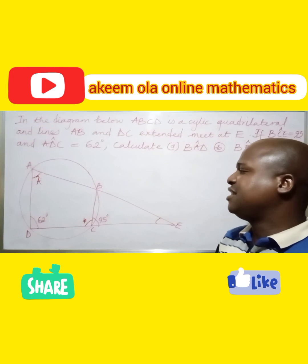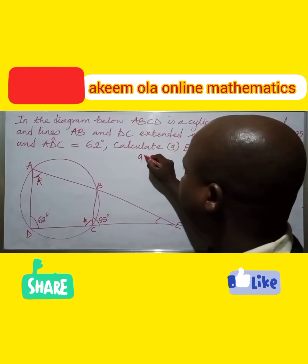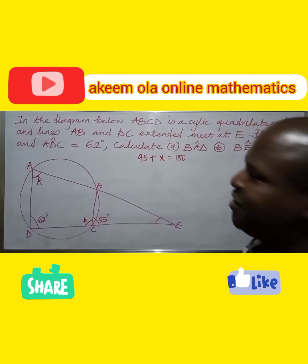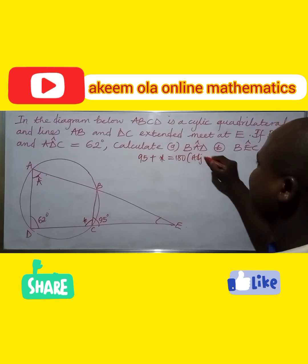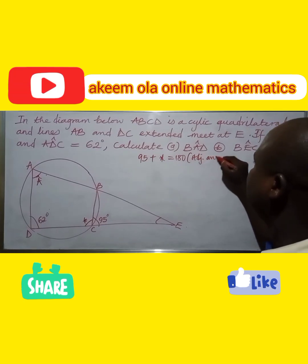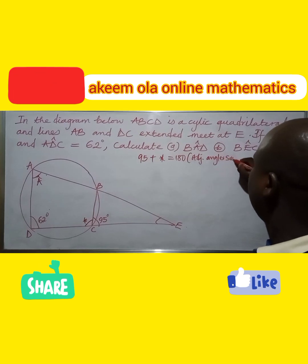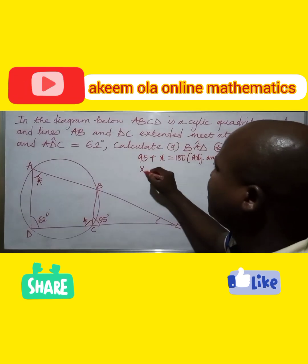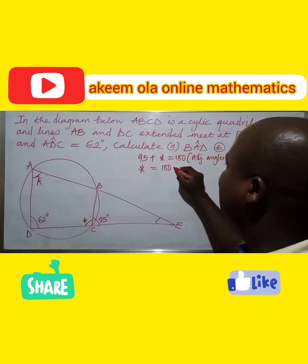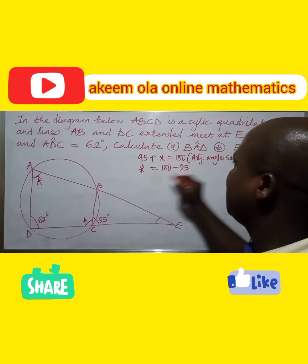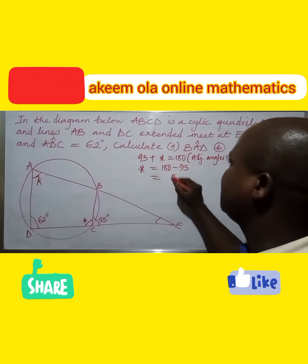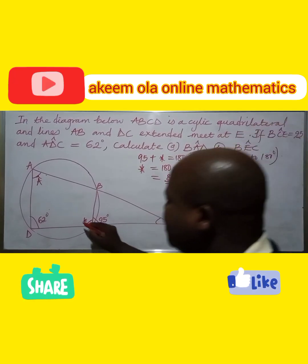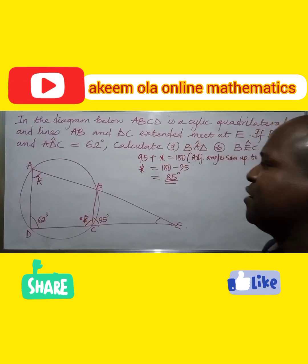Using angles on a straight line: 95° plus angle BCD equals 180°. That means angle BCD equals 180° minus 95°, which gives us 85°. So this angle here is 85°.